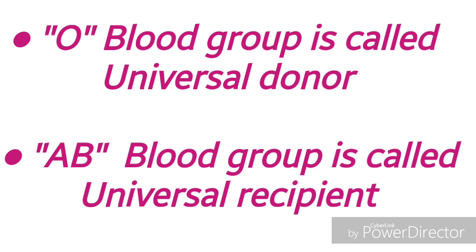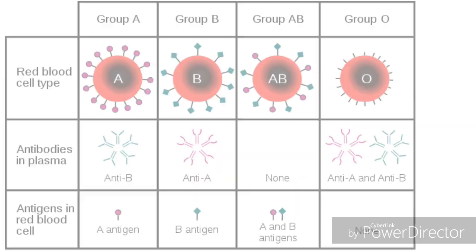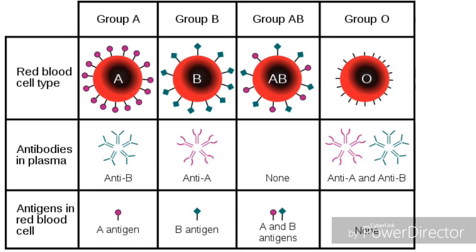Later, D. Castello and Stirli discovered the AB blood group and revealed the genetic inheritance of blood groups. O blood group is called the universal donor and AB blood group is called the universal recipient. O blood group people can donate blood to all groups, and AB blood group people can receive blood from any blood group.